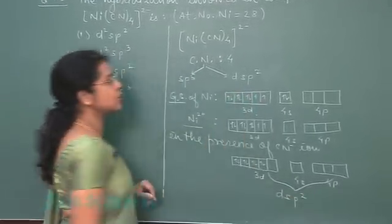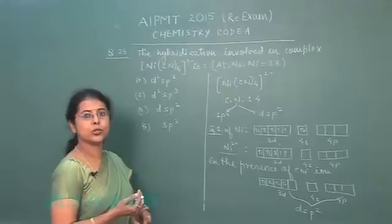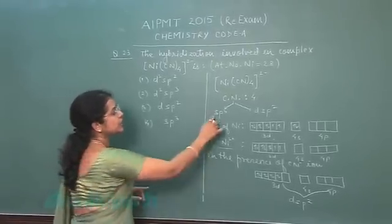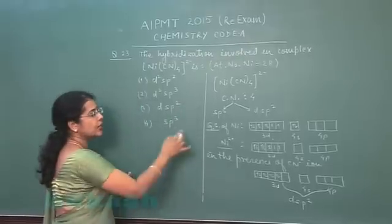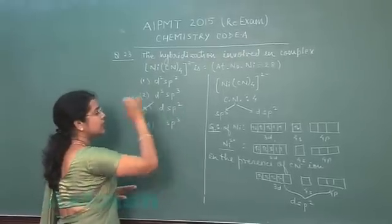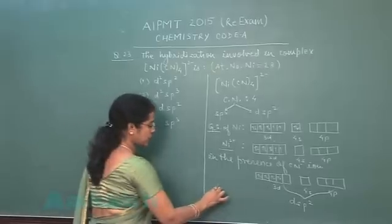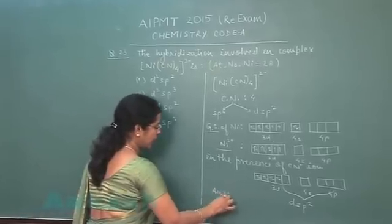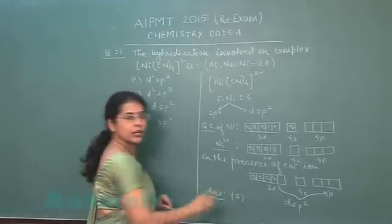1d, 1s and 2p orbitals participate in hybridization. So hybridization should be dsp2 hybridization. It means in these two options, the correct answer should be dsp2 hybridization. So correct answer is second option.